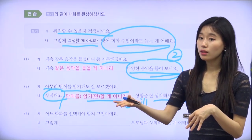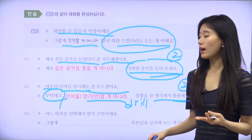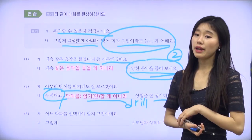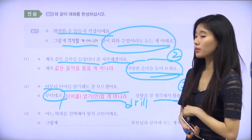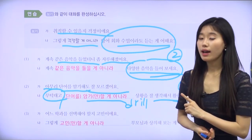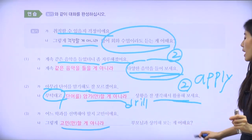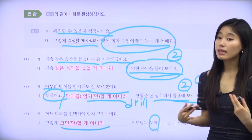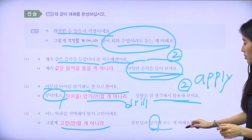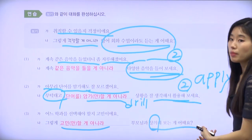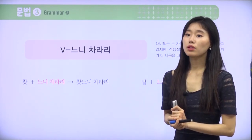어느 학과를 가야 할지 고민이에요 — 'I haven't decided which major to choose.' Better suggestion: 고민만 할 게 아니라 부모님과 함께 상의해보세요 — '상의 means to discuss or counsel — instead of just worrying, why not discuss it with your parents?'